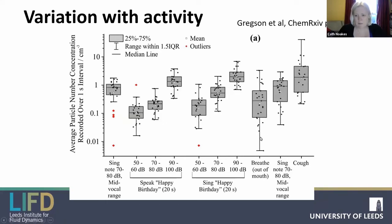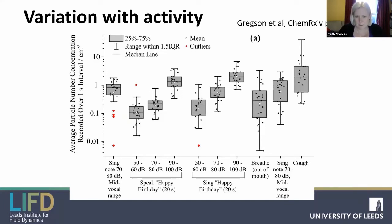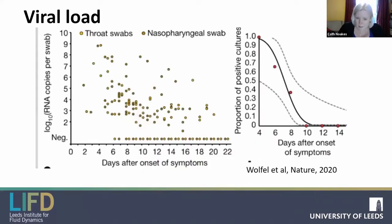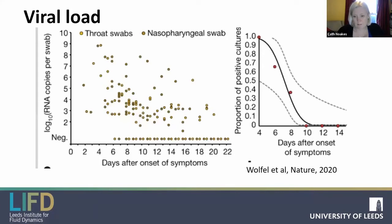Even looking at the breathing data from around 25 people, the distribution of outputs just during passive breathing is huge — you can start to see how messy this problem is going to be. On top of that, viral load varies considerably: data from early in the pandemic shows viral load tends to peak at the very beginning of the disease and drops off during it. There's a lot of variation caused by this too.